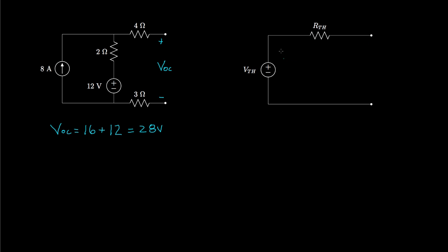So the open circuit voltage, dropping from its positive to its negative terminal, will be 8 times 2, or 16, plus 12, and that will be 28 volts. If we look at the Thevenin equivalent between those two terminals, no current flows through the resistor because we have an open circuit, so the voltage between the two terminals is just the value assigned to the source. Therefore, the open circuit voltage equals the value of that source.